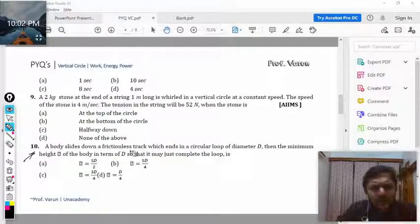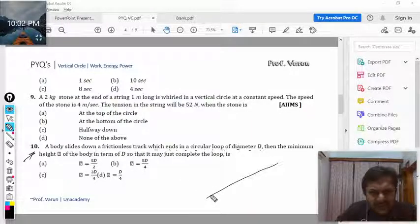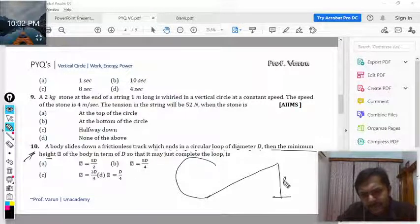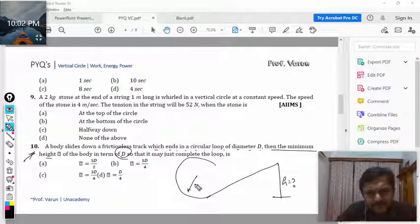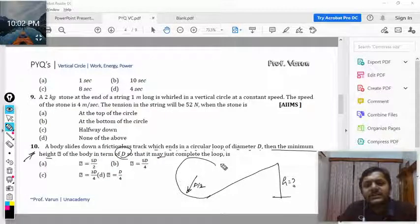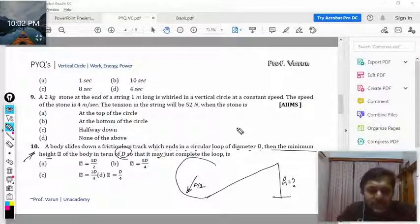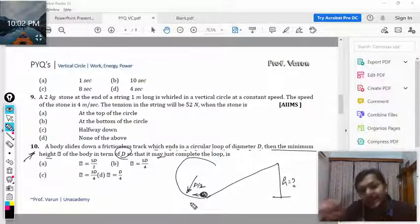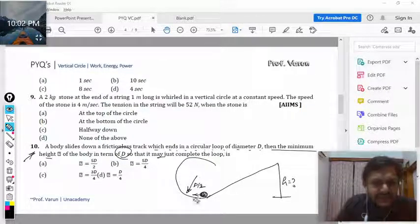Question number ten: A body slides down a frictionless track which ends in a circular loop of diameter d. The minimum height h of the body in terms of d where it is d/2, so that it may just complete the loop is? We see that if the body is at the bottom and it is completing the loop, the velocity will be root of 5gr. We will see what is the kinetic energy here and equate with the potential energy.